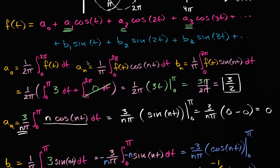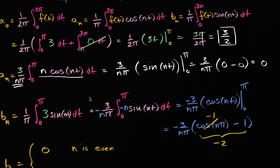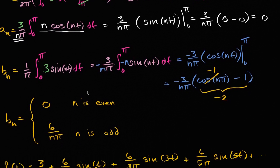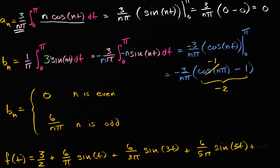So it made sense that our a sub n's were all zero for n not equaling zero. And so based on what we found for our a sub zero, a sub n's, and b sub n's, we could expand out what this Fourier series actually looks like.